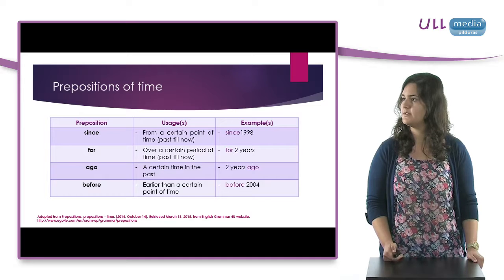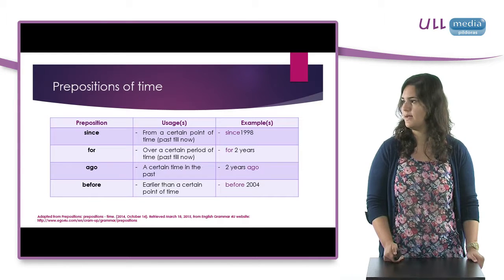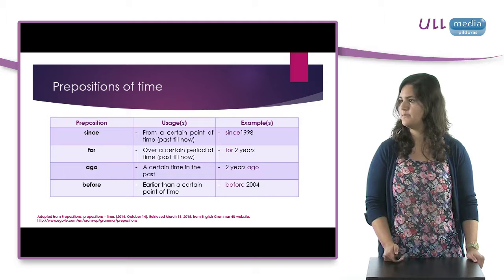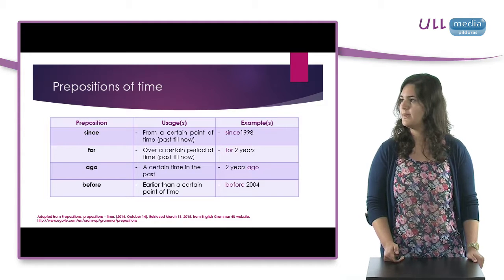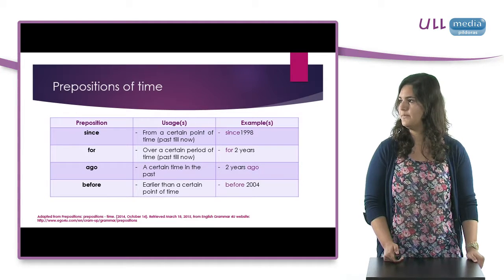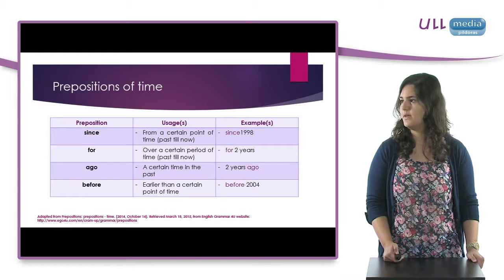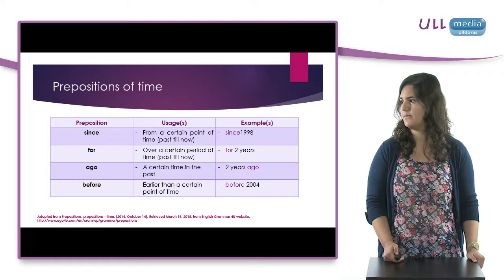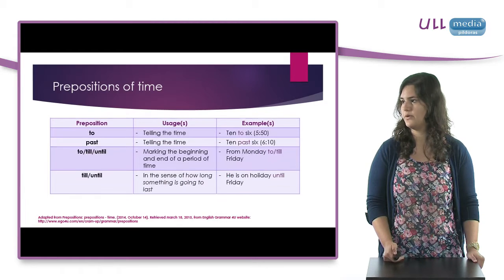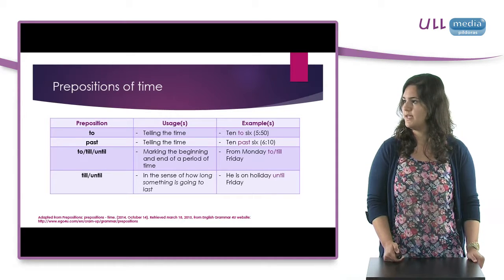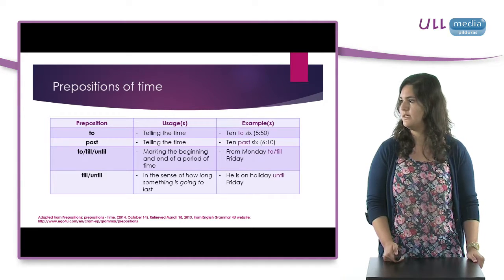The preposition SINCE from a certain point of time, for example since 1998. The preposition FOR over a certain period of time, for example for two years. The preposition AGO for a certain time in the past, for example two years ago. And the preposition BEFORE, earlier than a certain point of time, for example before 2004. Then the preposition TO in the usage of telling the time, for example ten to six.